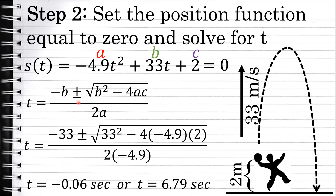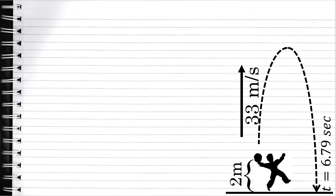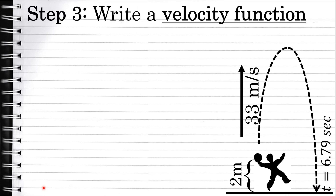A quadratic will always have two solutions, but in the context of this problem, 6.79 seconds is our solution. Negative 0.06 seconds does not make sense — it's outside the domain of this function, which goes from 0 until the ball hits the ground at 6.79 seconds. Now that we know it takes 6.79 seconds for the ball to hit the ground, we can move on to step 3: write a velocity function.